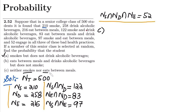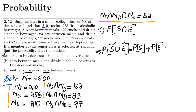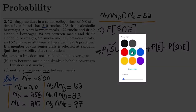Before finding that, we need to find the probability of students who either smoke or eat between meals, or both. So I need to find the probability of S union E. I have to calculate P(S) + P(E) minus P(S intersection E).